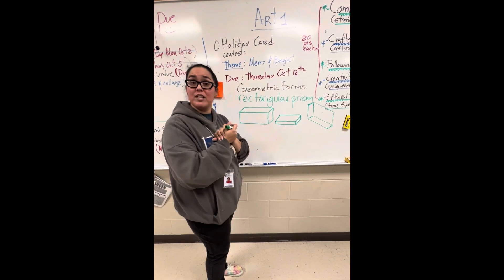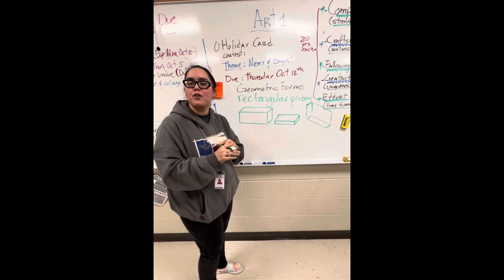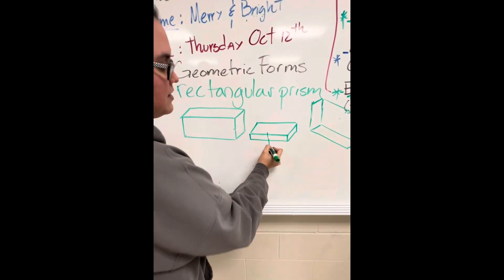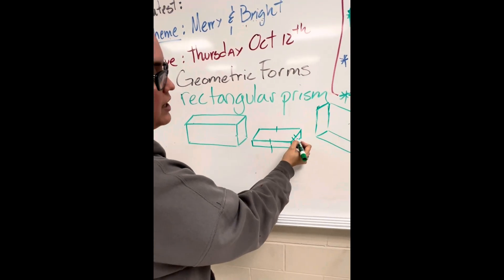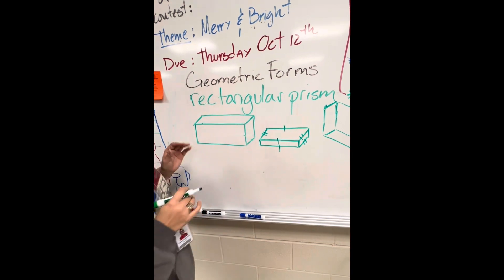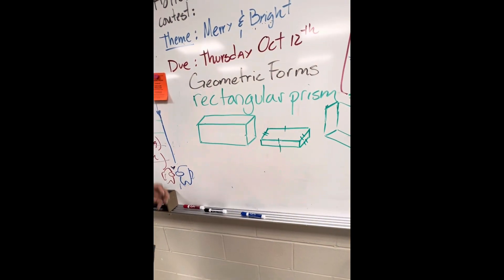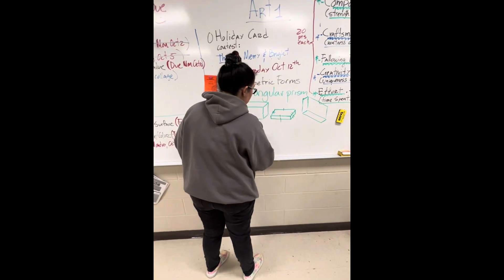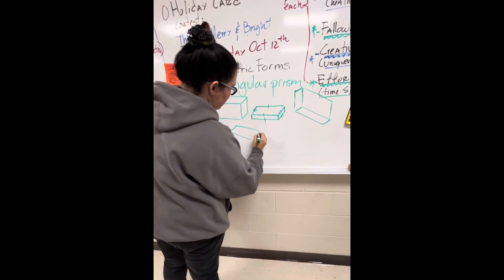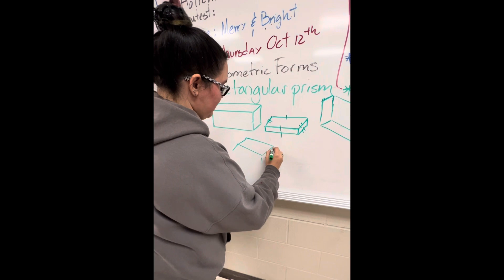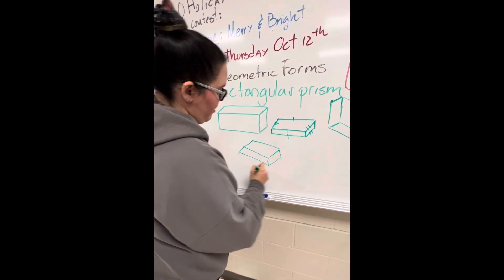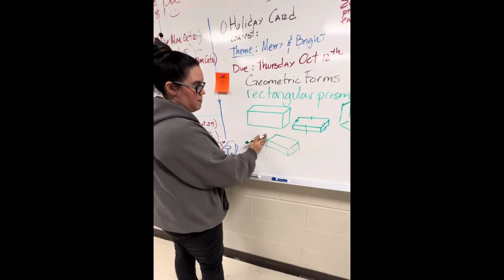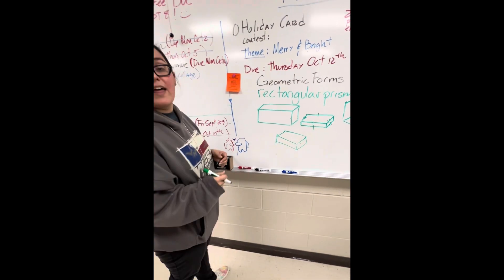How do you double-check a rectangular prism? The same exact way you double-check a cube. Is this line parallel to this one? Is this parallel to this? As long as that is the case, you're going to have a good rectangular prism. Just like a cube, you'll know it's wonky if the sides are not parallel.